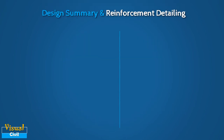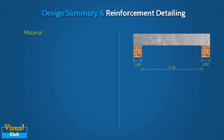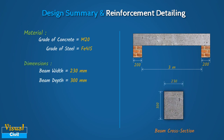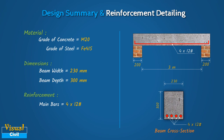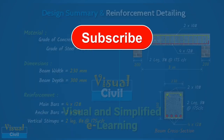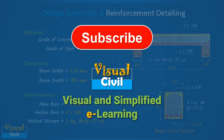Finally, let us summarize the design and reinforcement detailing. A rectangular singly reinforced beam is designed with M20 grade concrete and Fe415 steel. The width of the beam is 230 mm and the depth is 300 mm. Four 12 mm diameter bars are provided as main reinforcement at the bottom, and 2 numbers of 10 mm diameter bars are provided as anchor bars at the top. Two-legged 8 mm diameter vertical stirrups are provided at a spacing of 175 mm center to center. Subscribe to this channel for interesting videos on civil engineering topics.